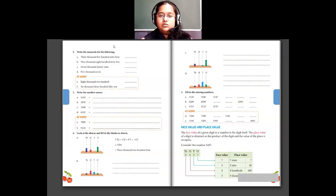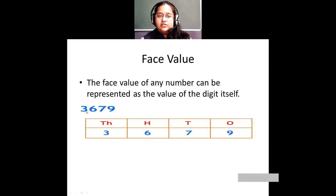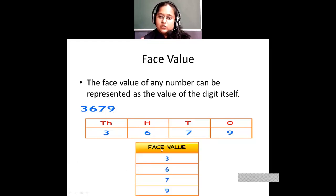Now moving on to face value and place value. Face value of any number is represented as the value of the digit itself. For example, with the number 3,679: 3 is in thousands, 6 in hundreds, 7 in tens, 9 in ones — but the face value of 3 is just 3, face value of 6 is just 6, face value of 7 is just 7, and face value of 9 is just 9, regardless of its position.